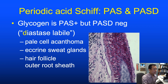A quick note on pronunciation: this is the periodic acid–Schiff stain. I usually say PAS, but this is not like your periodic trips to a day spa or the periodic table of elements—this is periodic as in hydrogen peroxide and iodinated.